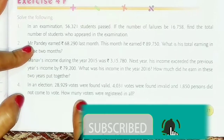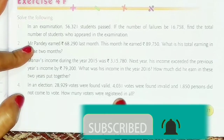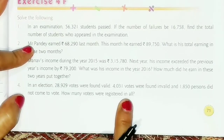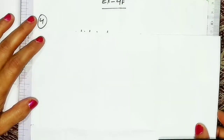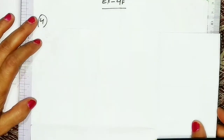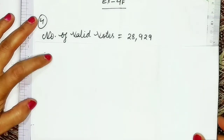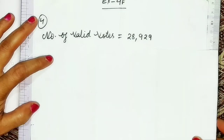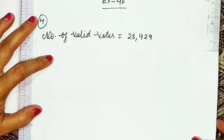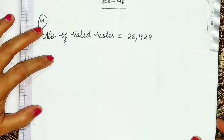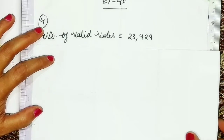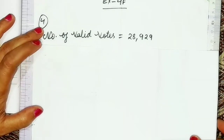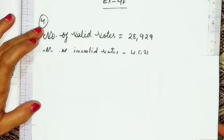So how many voters were registered in all? Let us solve question number 4. The first statement is: the number of valid votes is equal to 28,929.